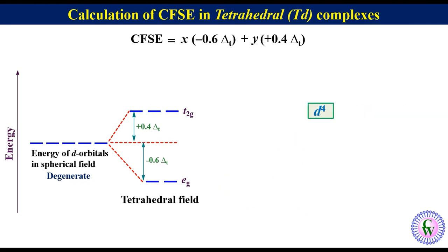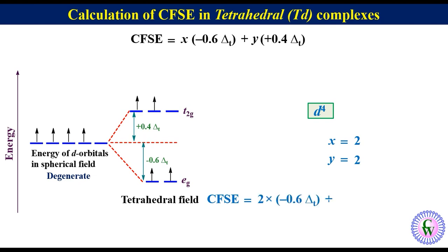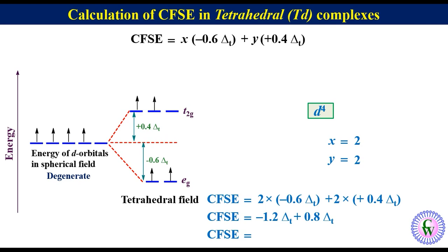If there are 4 D-electrons in the metal ion of a tetrahedral complex, in a spherical field environment all 4 electrons will be here. In tetrahedral field, two electrons will be in eg orbitals and the remaining two will enter t2g. Since there are two electrons in eg and two in t2g, x is equal to 2 and y is also equal to 2. So CFSE is equal to 2 into minus 0.6 delta-t plus 2 into plus 0.4 delta-t, which gives minus 1.2 delta-t plus 0.8 delta-t. Thus CFSE will be equal to minus 0.4 delta-t.